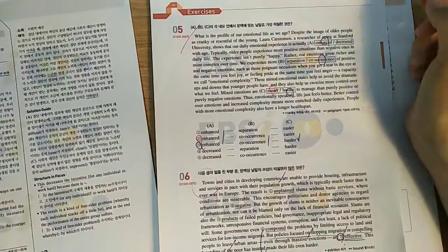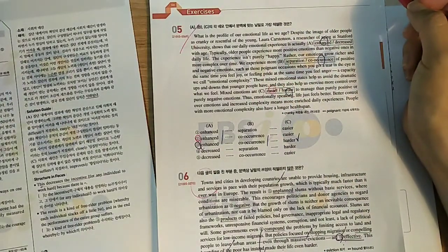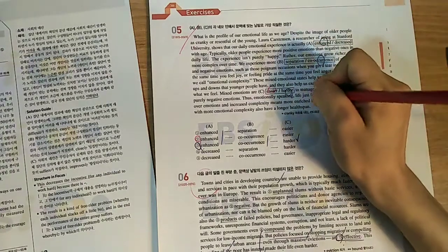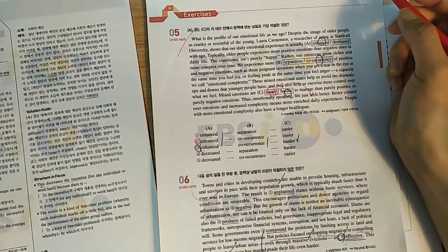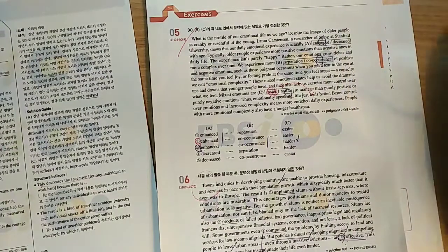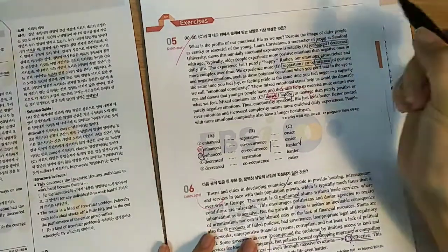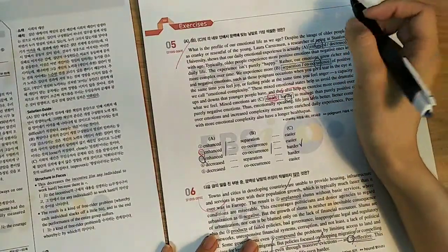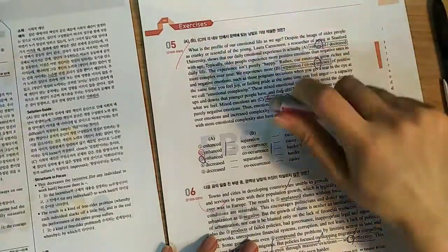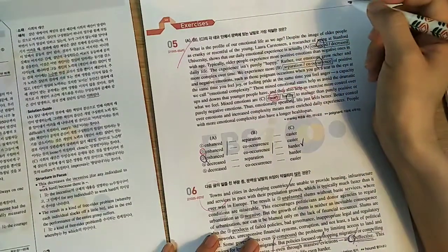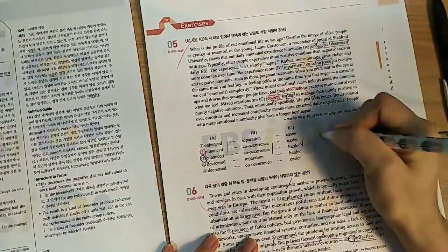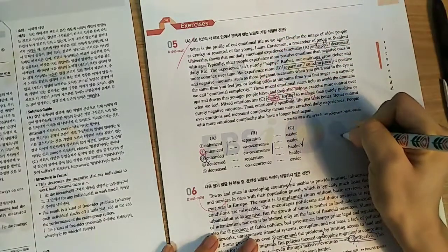Easier? Is it really easier for that? Emotionally speaking, life just feels better. It's easier. 알았어. Cranky, poignant. 그래서 모르는 단어는 모르는 단어를 찾아보자. Decreased, rather, separation, negative, and poignant.